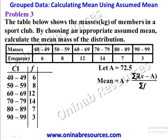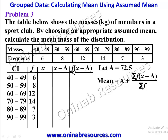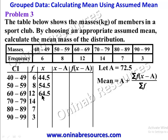Using the assumed mean formula, we create the additional columns for x, x minus a, and f times (x minus a). Computing the midpoints: 40 plus 49 divided by 2 gives 44.5; 50 plus 59 divided by 2 gives 54.5; 60 plus 69 divided by 2 gives 64.5; 70 plus 79 divided by 2 gives 74.5; 80 plus 89 divided by 2 gives 84.5; and 90 plus 99 divided by 2 gives 94.5.